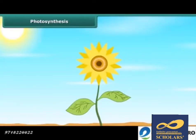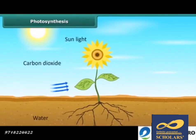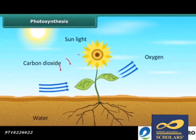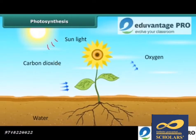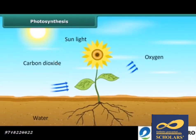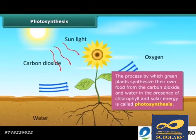As we know that green plants synthesize their own food. But do you also know how they synthesize their own food? Green plants make their own food by the process of photosynthesis. Photosynthesis is a process by which green plants synthesize their own food from carbon dioxide and water in the presence of chlorophyll and solar energy.